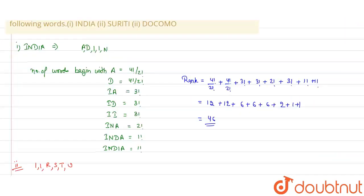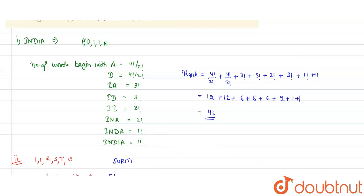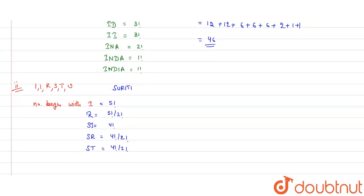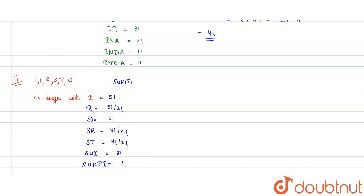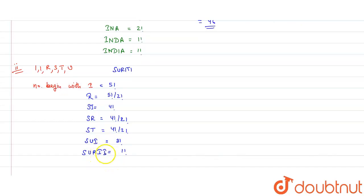The word we want is S-U-R-I-T-I. We don't want T, so we go to SU. After SU comes I, and the remaining arrangements give 3 factorial. We don't want SUI, so we go to SUR. After SUR comes I, giving 1 factorial for the remaining one term, which is T.